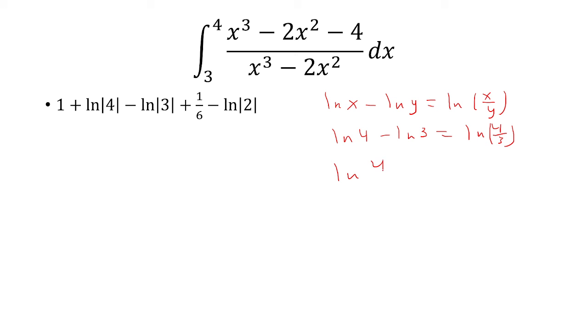But we also have ln of 2. So that's just going to be ln of 4 over 6, which is just ln of 2 thirds. And so this is all. The sign here is going to be positive.